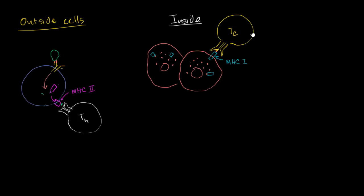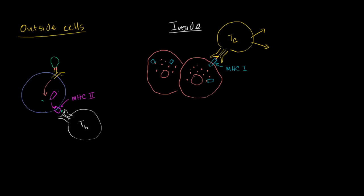And so the cytotoxic T cell will begin to replicate. Once again, like other types of immune cells, it's going to replicate into the memory cells, just in case this type of thing shows up 10 years in the future, and also the effector cells. So this is memory and also effector cytotoxic T cells.